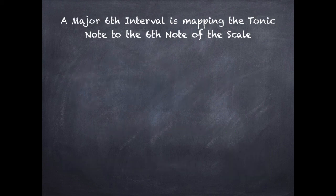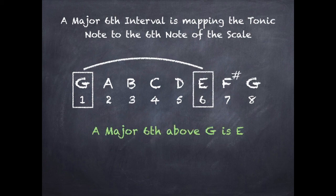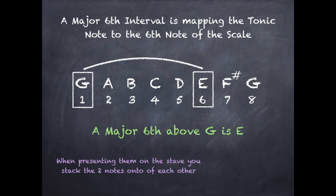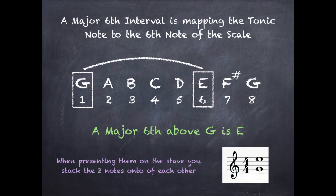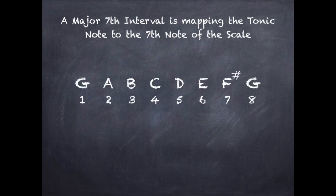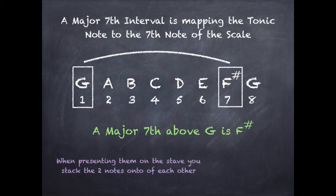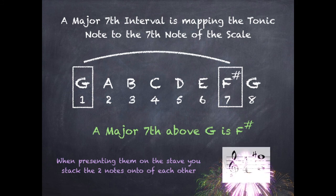A major sixth interval maps the tonic note to the sixth note of the major scale. I go from G to E, so a major sixth above G is E, and I stack them on the stave. A major seventh interval maps the tonic to the seventh note: from G to F sharp. So a major seventh above G is F sharp, and I stack them on the stave.